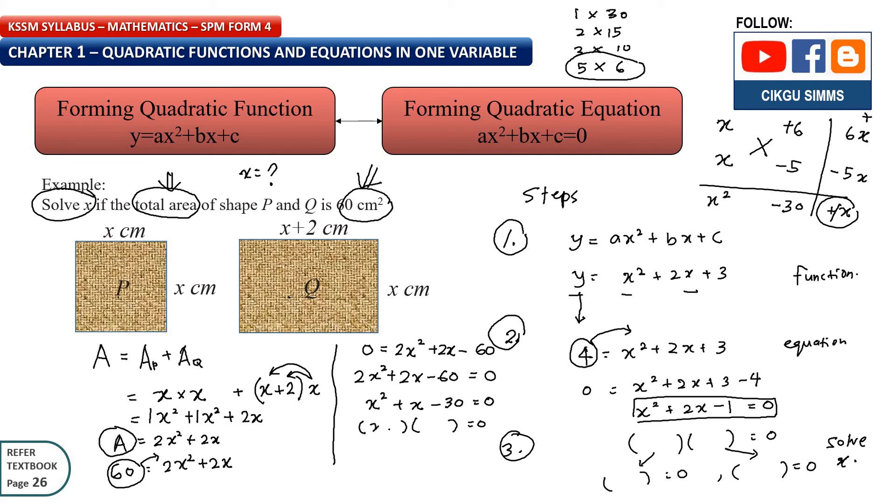x plus 6, you put in the first bracket. Second bracket, you put in x minus 5. So the first part equal to 0, second part equal to 0.